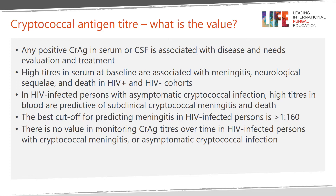To summarize, any positive CRAG in the serum, plasma, or CSF is associated with disease and needs evaluation and consideration of treatment. High titers in the serum at baseline are associated with meningitis, neurologic sequelae, and death in both HIV-infected and HIV-uninfected cohorts. In HIV-infected persons with asymptomatic cryptococcal antigenemia, high titers are predictive of subclinical meningitis and death, with the best cutoff being 1 to 160 or greater. Finally, there is no value in monitoring CRAG titers over time in HIV-infected persons with cryptococcal meningitis or asymptomatic cryptococcal infection. Thank you for your attention.